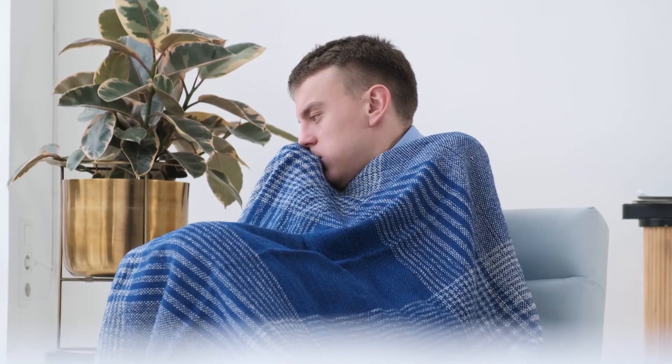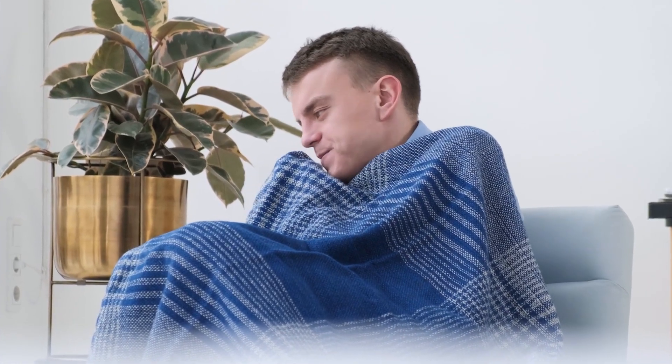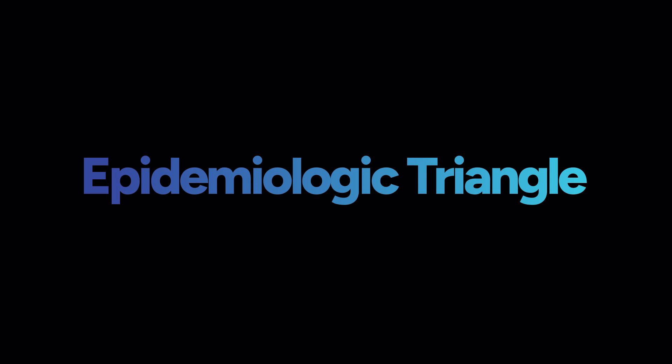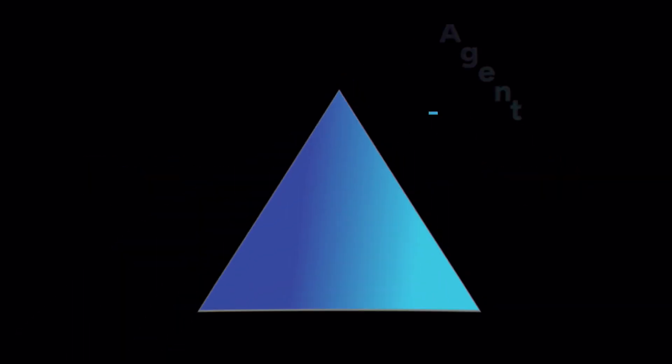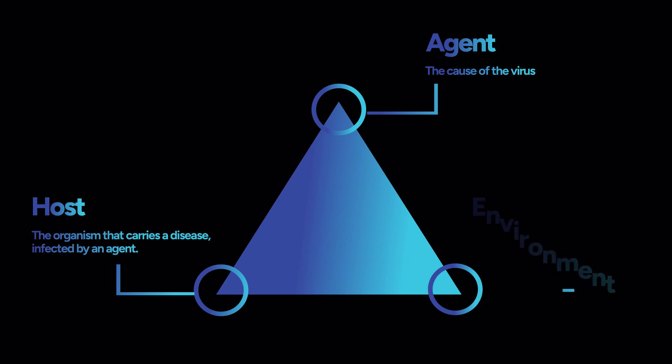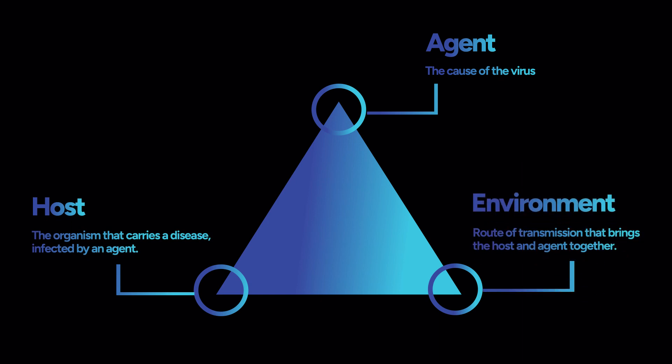Infectious agents cause an infection, an adverse reaction in the body. There are three things that are required to cause infection, often referred to as the epidemiologic triangle. They are an external agent or source, a susceptible host, and a route of transmission — the environmental factors that bring the host and agent together.